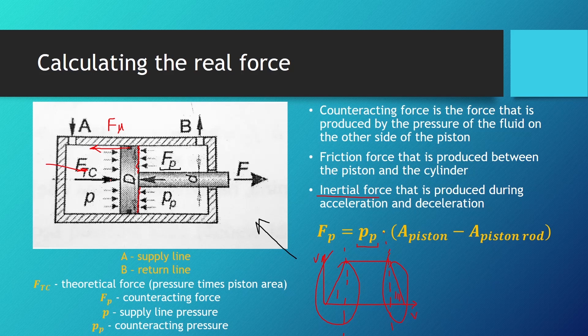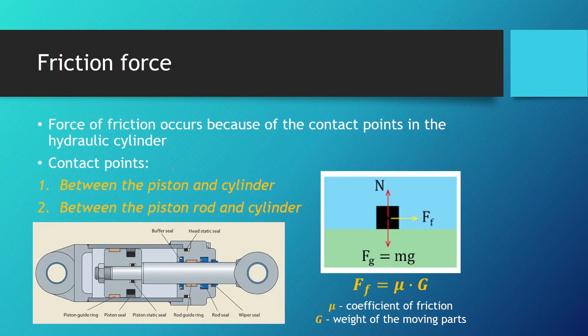If the cylinder is single-acting and has a spring for the automatic return, the force from the spring occurs as well. The force of friction occurs because of the friction between the piston and the cylinder, and between the piston rod and the seals.